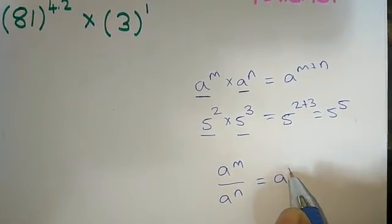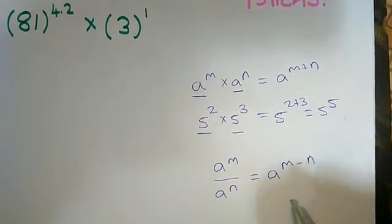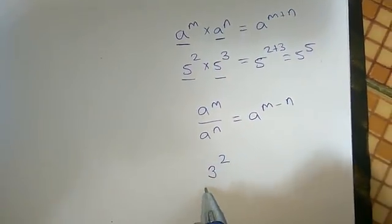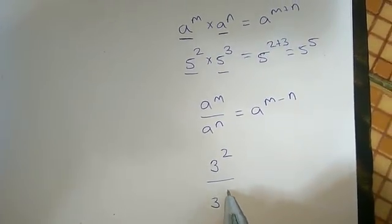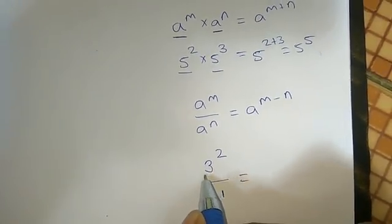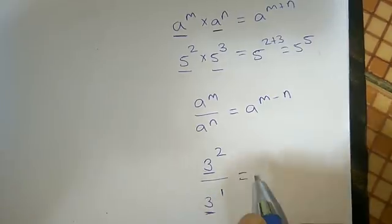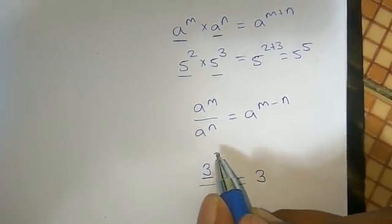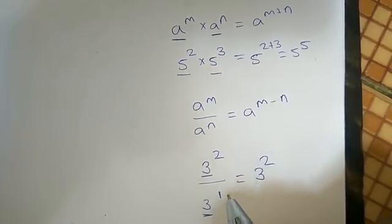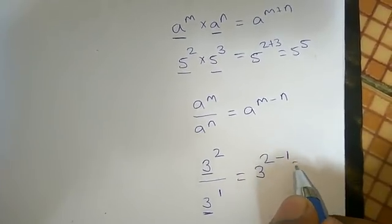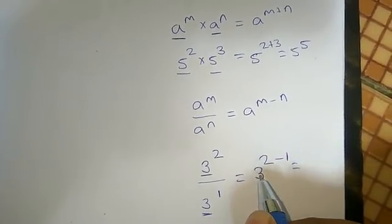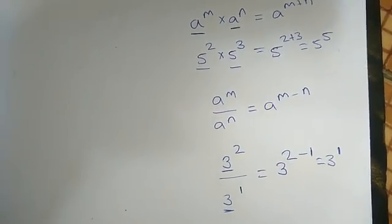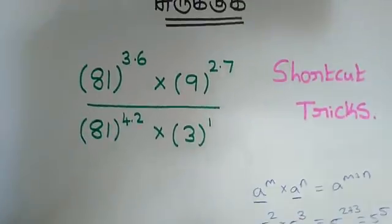Next, if we divide a power m by a power n, it is equal to a power m minus n. For example, 3 power 2 divided by 3 power 1 is equal to 3 power 1, because 2 minus 1 equals 1.